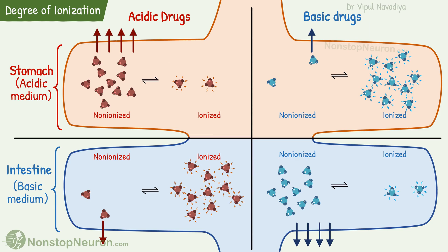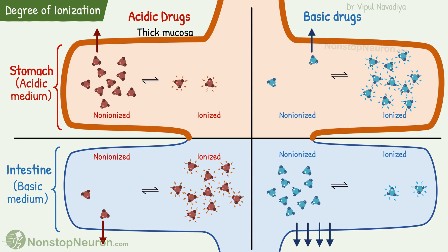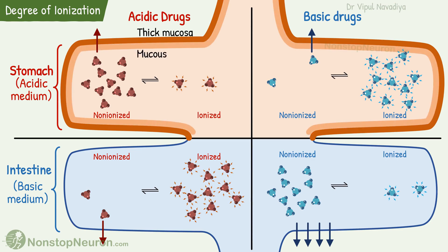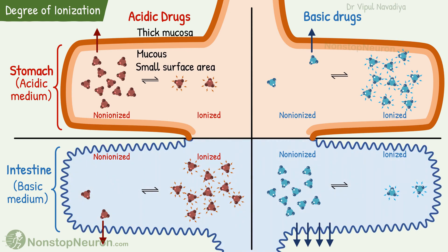Although a larger portion is available for absorption in the stomach, the actual absorption is small. The reason is the mucosa in the stomach is thick, covered with thick mucus, and the surface area of the stomach is small. Whereas in the intestine, there are no such problems. Due to villi, a much larger surface area is available for absorption. So even for acidic drugs, absorption mainly occurs from the intestine.